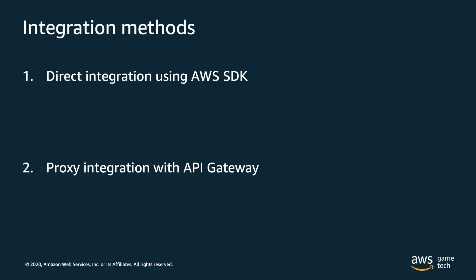There are two different ways you can integrate AWS backend services with game clients such as Unity and Unreal Engine to send your data to your analytics pipeline. The first way is direct integration using our AWS SDKs, or software development kits. We offer different SDKs for different runtimes — for example, if you're developing a game in Unity, you can use our AWS .NET SDK, which supports C Sharp. The second option is using an API proxy with Amazon API Gateway.